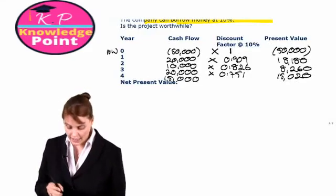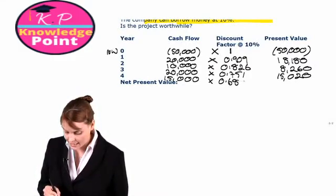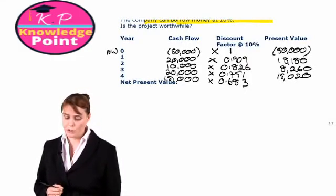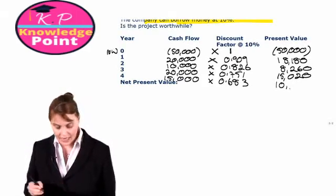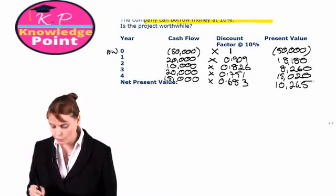You should get 0.683, which means the present value of that cash flow is $10,245.